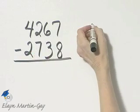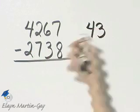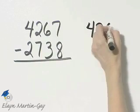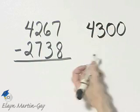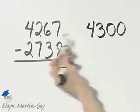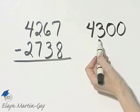That becomes four, three, and then replace these two digits with zeros. And 4,267 to the nearest hundred is 4,300.